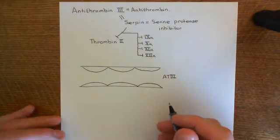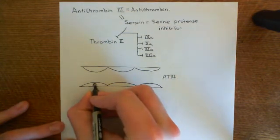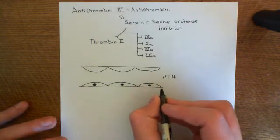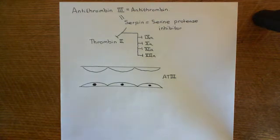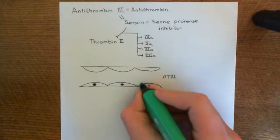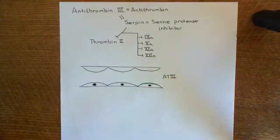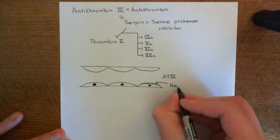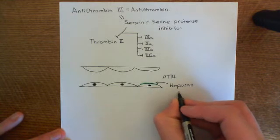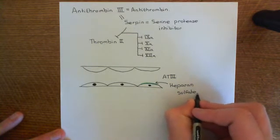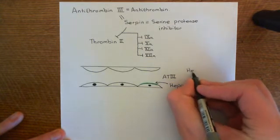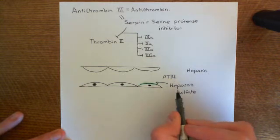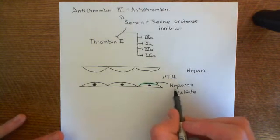What is this polysaccharide on the surface of the endothelial cells? It is a polysaccharide known as heparan sulfate. People often confuse heparan sulfate with heparin, so I want to explain the difference. Both are endogenous polysaccharides, and both bind and activate antithrombin-III, but they are fundamentally different from each other.